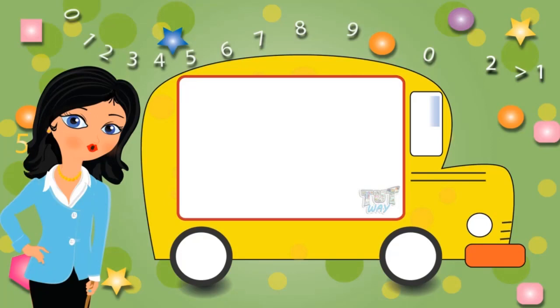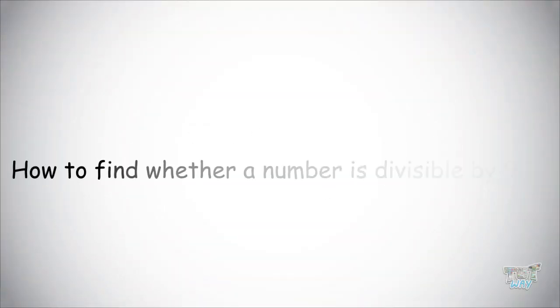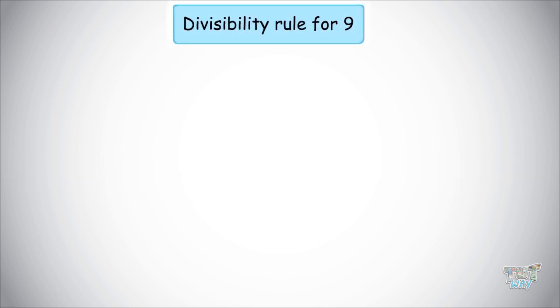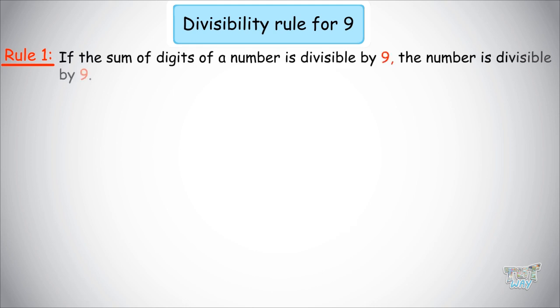Hi friends! Today we will be learning some more divisibility rules, so let's start. We will start with learning how to find whether a number is divisible by 9. In order to find out whether a number is divisible by 9, we need to have a very interesting and simple rule: if the sum of digits of a number is divisible by 9, the number is divisible by 9.